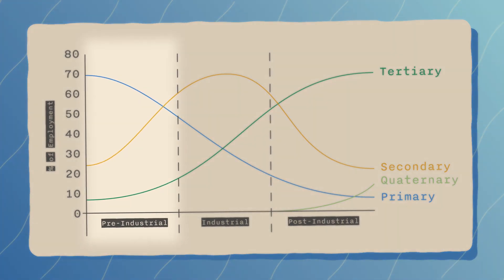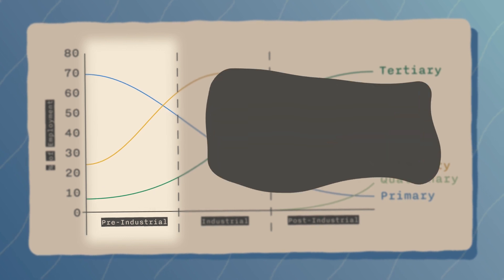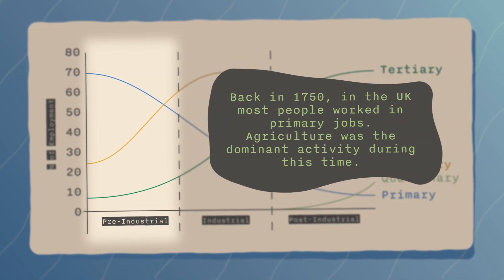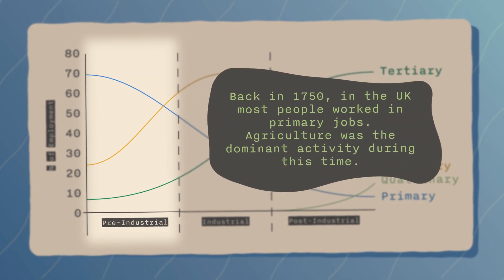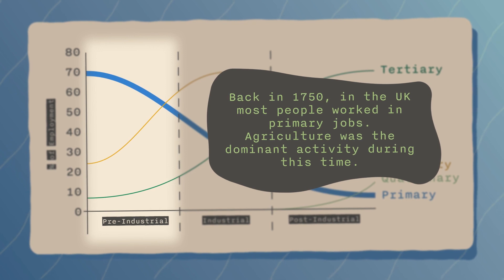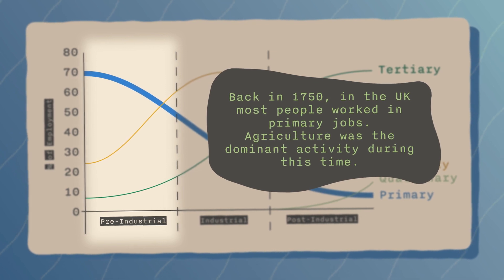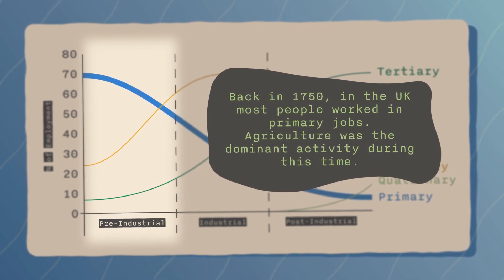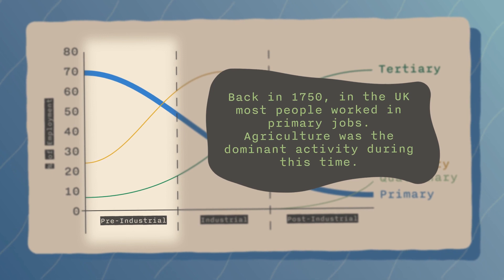Phase one: pre-industrial. Back in 1750 in the UK, for example, most people worked in primary jobs. Agriculture was the dominant activity during this time. Many economies at this stage focus on trading raw produce. Some developing countries like Bangladesh still heavily rely on primary industries today.